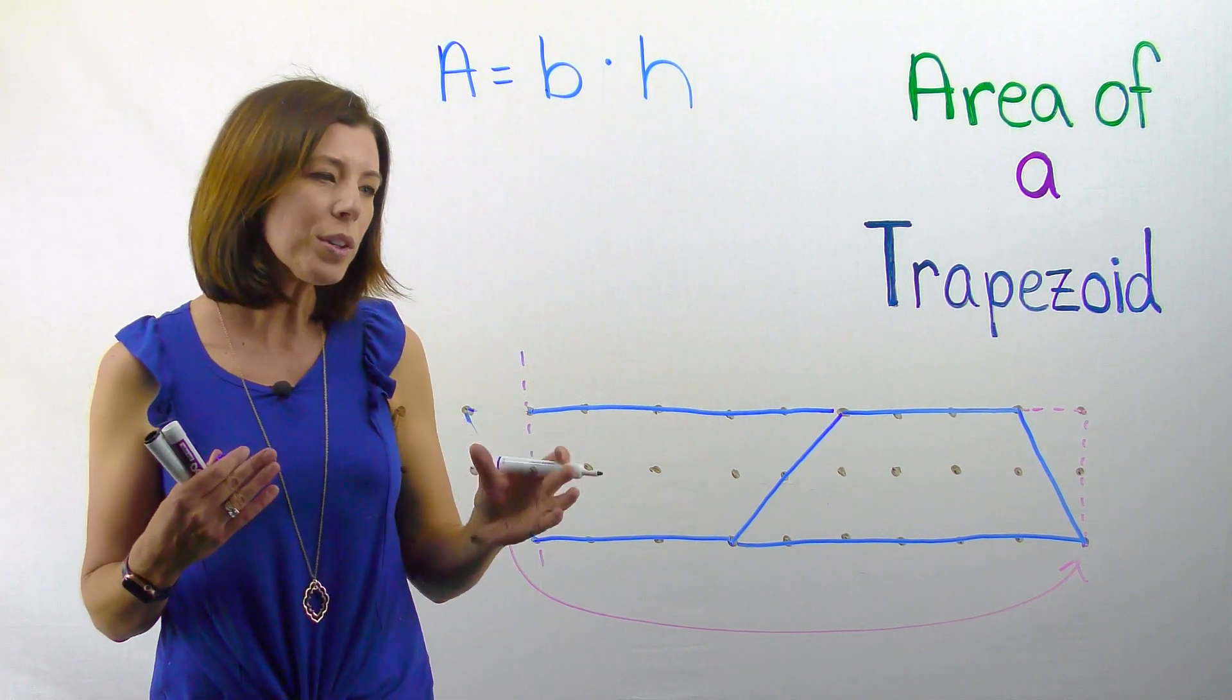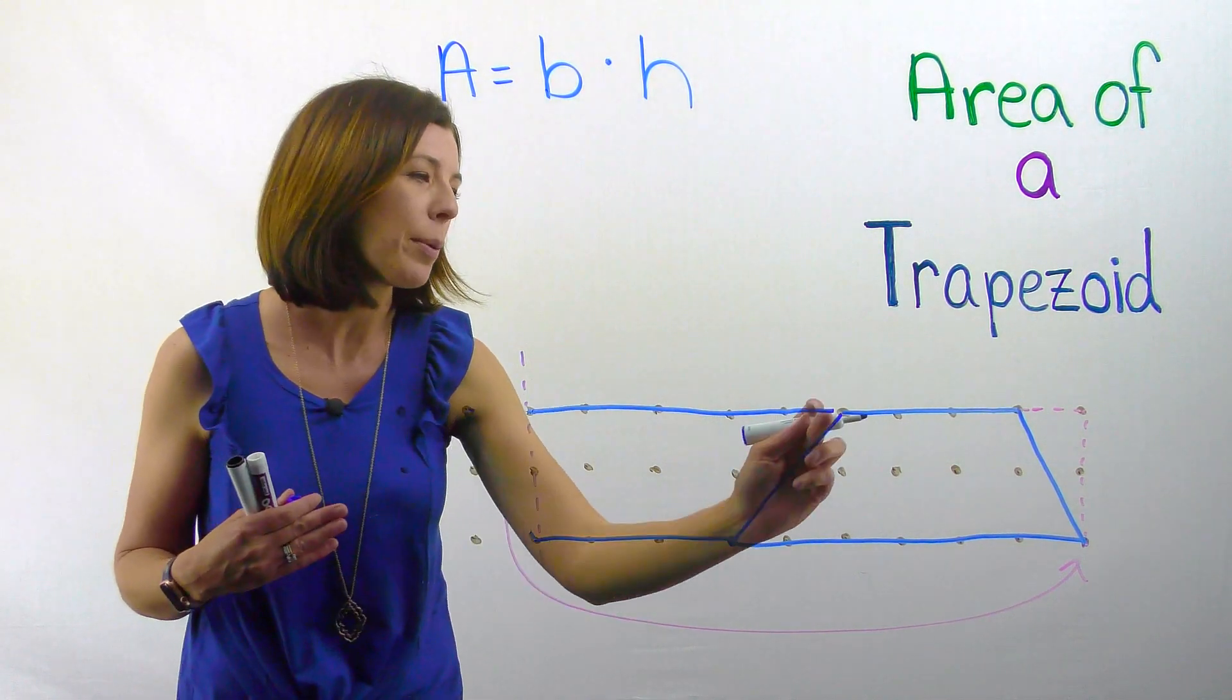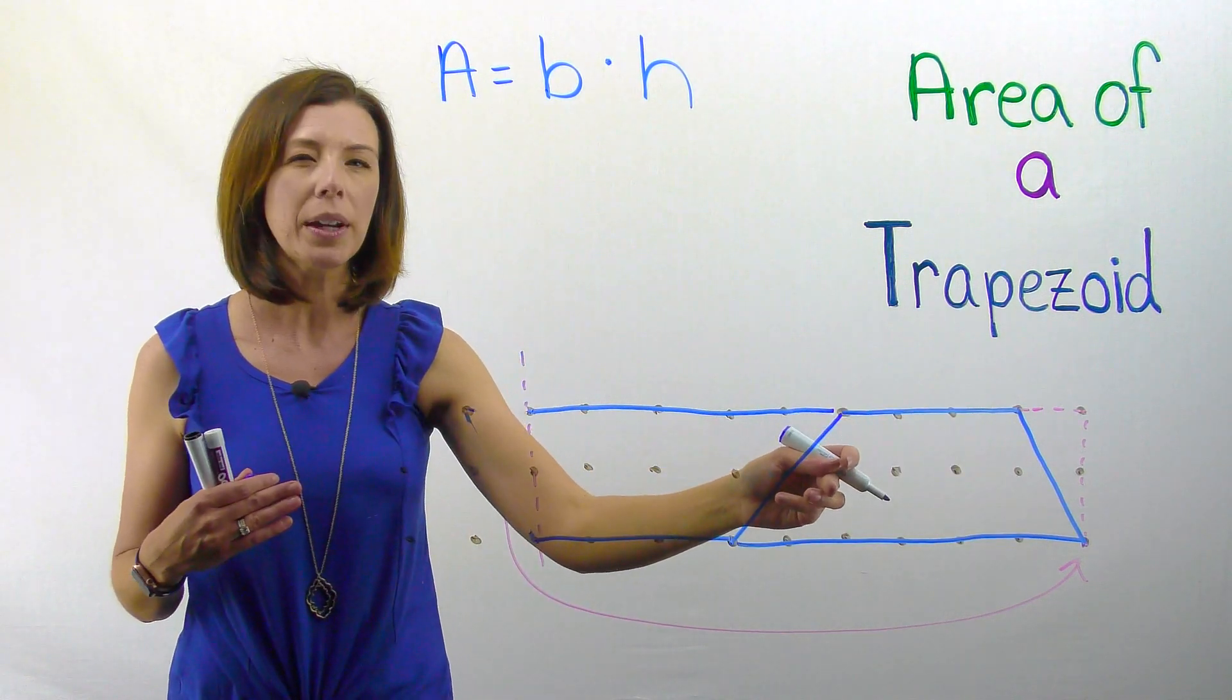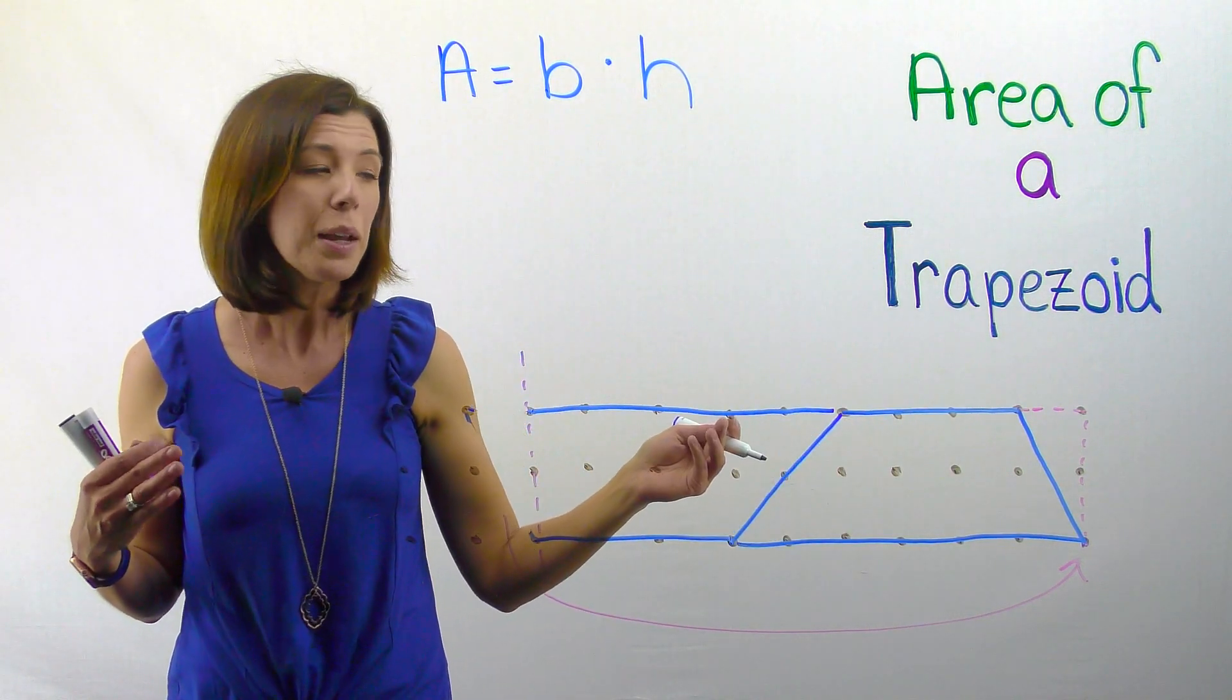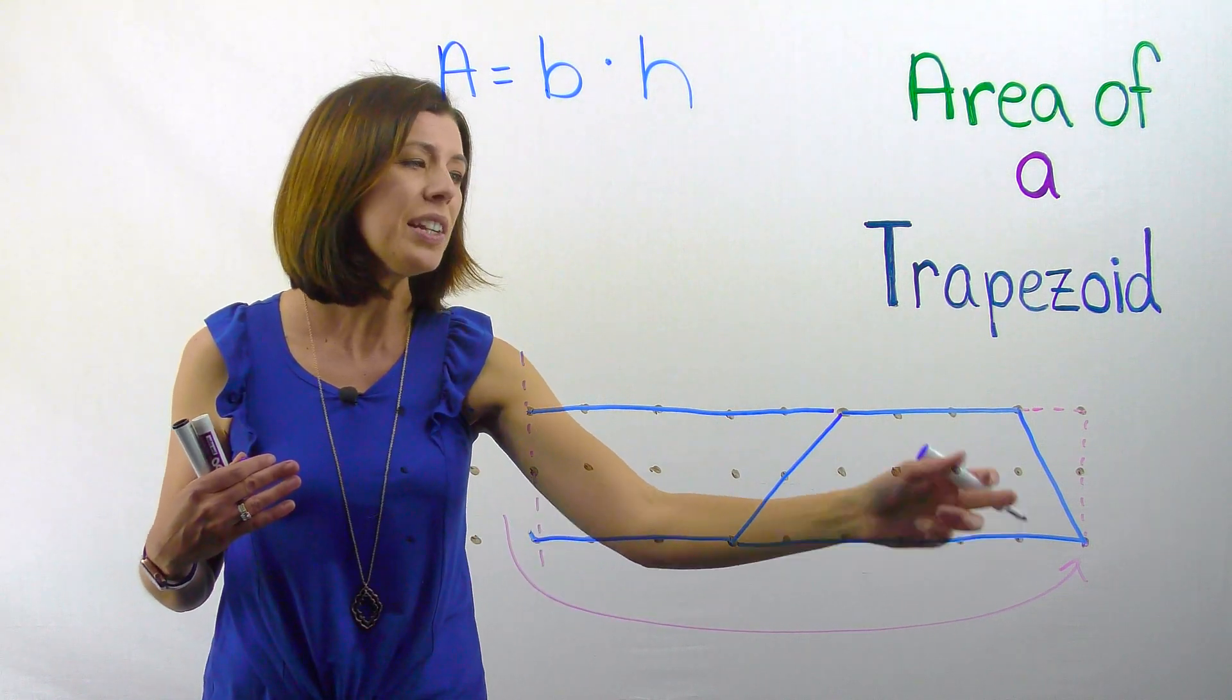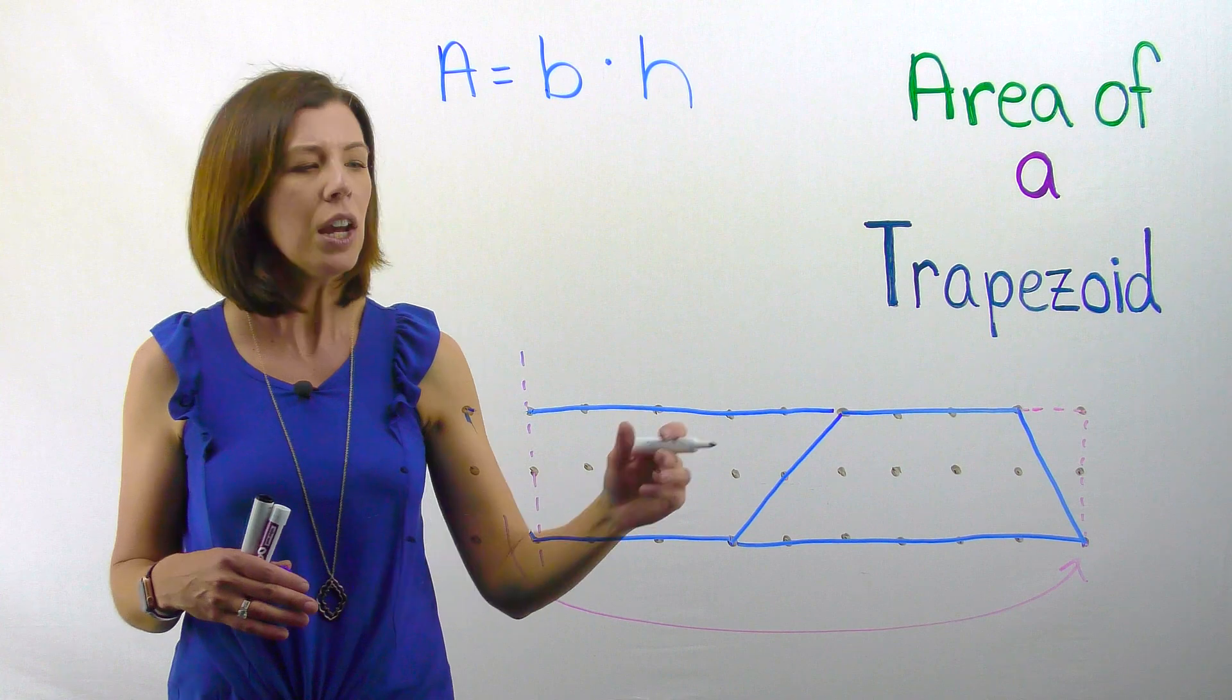So we know that the area of a parallelogram is base times height. I completely agree. However, when we're looking at a trapezoid, again, remember, think back to this shape right here. When I'm looking at this trapezoid, what base? Because if I use the bottom base, one, two, three, four, five, six, it's very different than the top base, which is three.